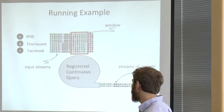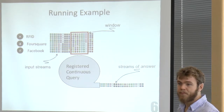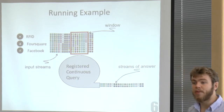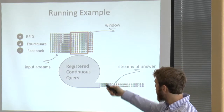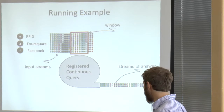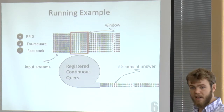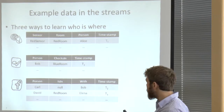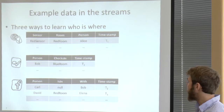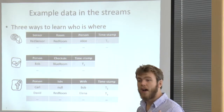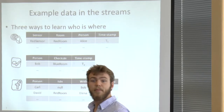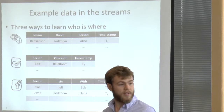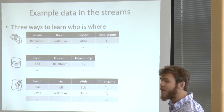Let's start with our running example. We have three different streams — one from an RFID sensor, one from Foursquare the social network, and one from Facebook. The sensor stream points out who is in a room. The Foursquare stream reports check-ins of people, while Facebook has a more expressive stream: it allows you to tell where you are — using this conceptual model of a room — and who you are with.